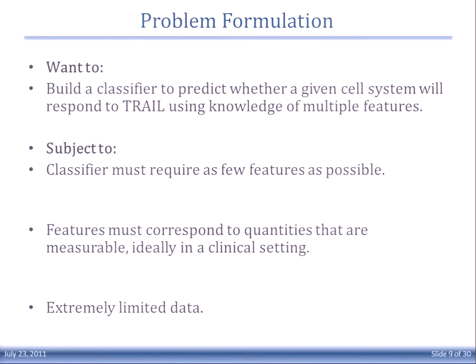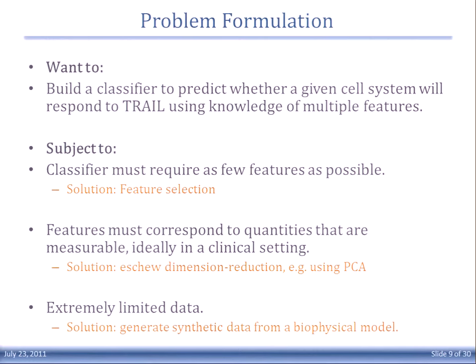More formally, we want to build a classifier to predict whether a cell population will respond given hopefully as few measurements as possible. There are some design constraints to this problem. We want to use as few features as possible. The motivation is that these clinical samples are very rare, so you can't just go doing as many measurements as you like. Plus, these measurements are hard to do. So this has to be very efficient in terms of the number of dimensions.